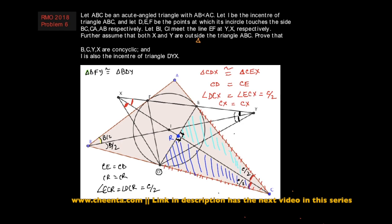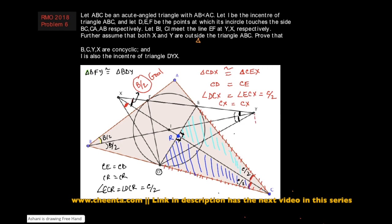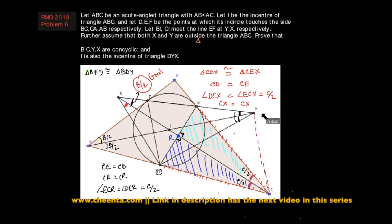Since angle CRD is a right angle, our goal now is to show that angle CXY equals B/2. This is the key goal we have not yet shown. If we can show angle CXY equals B/2, then since angle CBY also equals B/2 — because CY subtends angle B/2 at point B — we would be done by the angles in the same segment property.